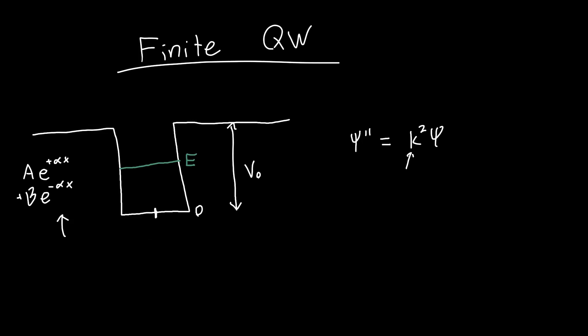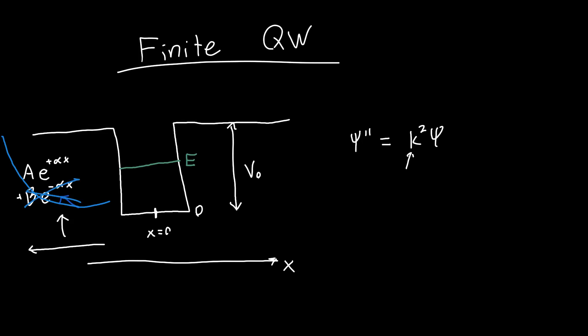Just to be clear, x equals zero is defined at the center of the well. If the wave function had a term b·e^(−αx) on the left side, as we approach further left, x becomes more negative, so this term grows and grows unbounded. This is not a physical solution to the Schrödinger equation, so we can ignore that term since it blows up as you get further away from the well.